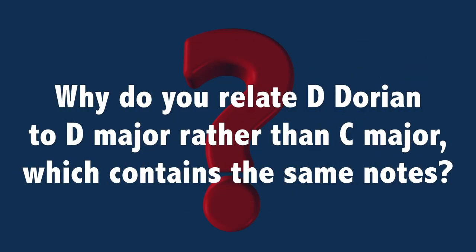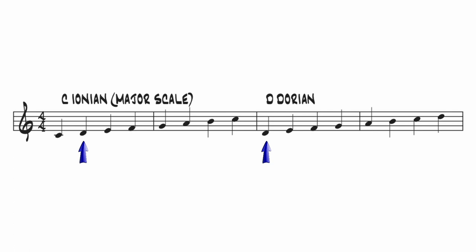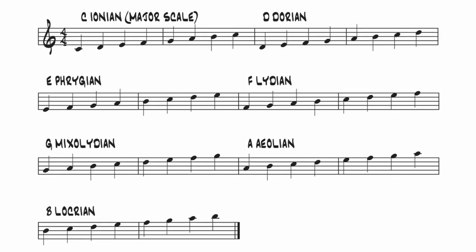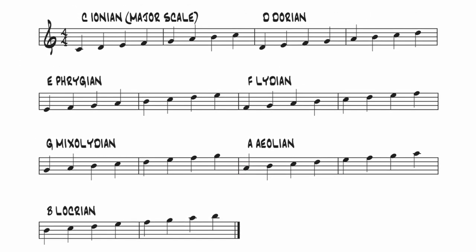Why do you relate D-Dorian to D major rather than C major, which contains the same notes? Most students first learn the modes as a scale that contains the same notes as another scale. For example, a major scale starting on the second note is called the second mode, which we call the Dorian mode. The D-Dorian mode contains the same notes as C major, also called Ionian. Since each major scale generates seven different modes and there are 12 distinct keys, if you can play all your major scales starting on any note, you've effectively learned 84 different scales. But in order to use those modes to improvise, we need to think about it in another way.